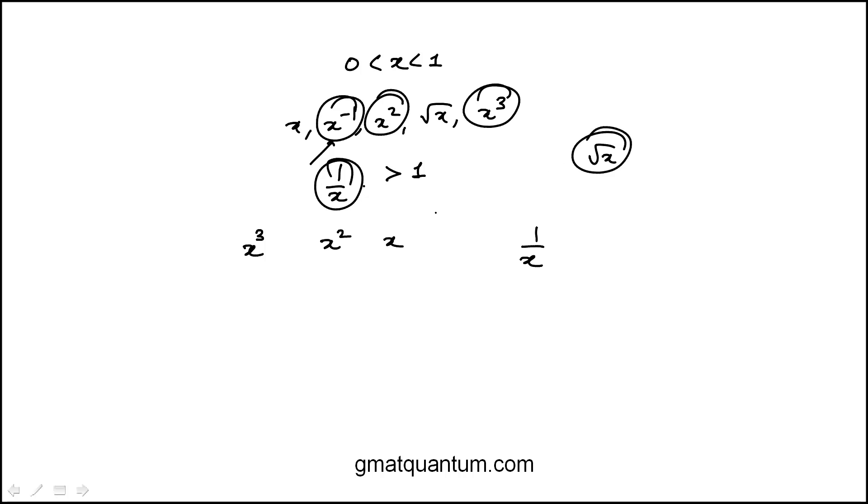And then we're left with square root of x. When you take a square root of the decimal, it becomes larger. So for example, x is 0.25, square root of x is 0.5.